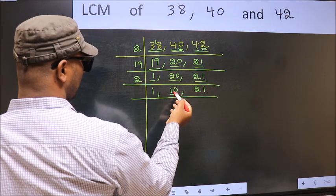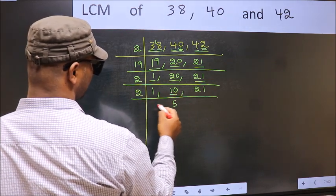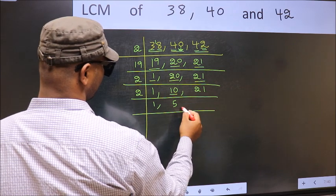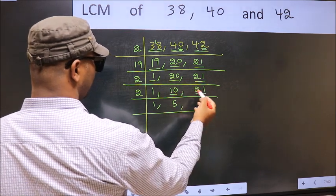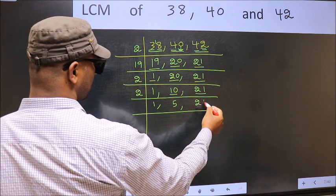Now here we have 10, 10 is 2 times 5. The other number 21, not divisible by 2, so you write it down as it is.